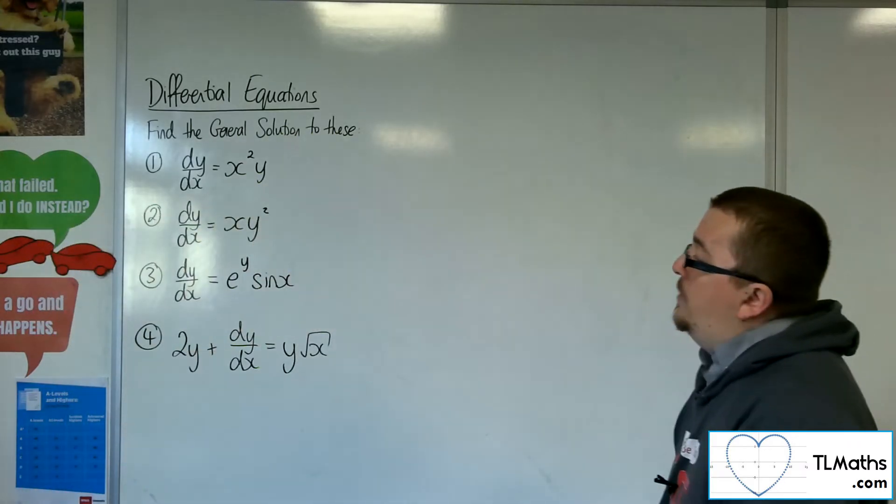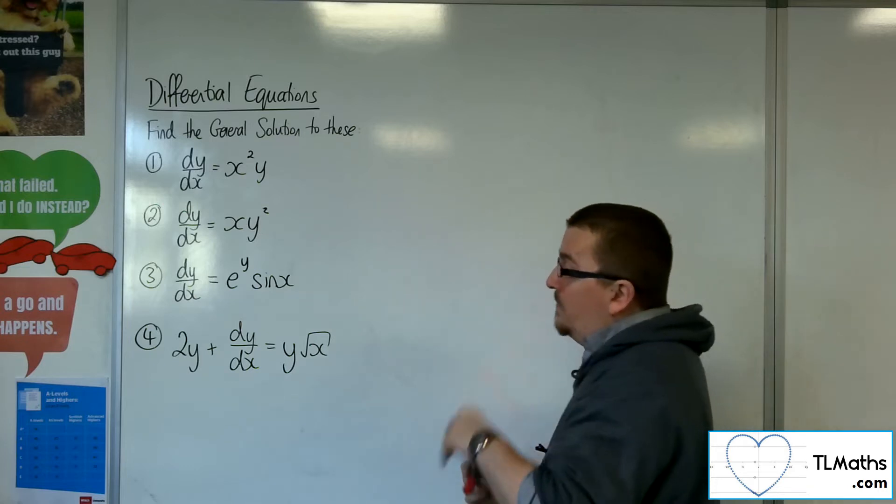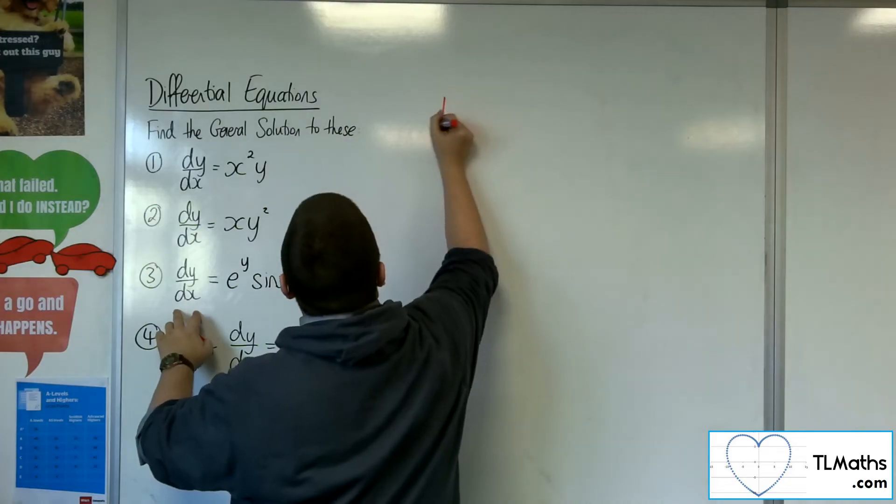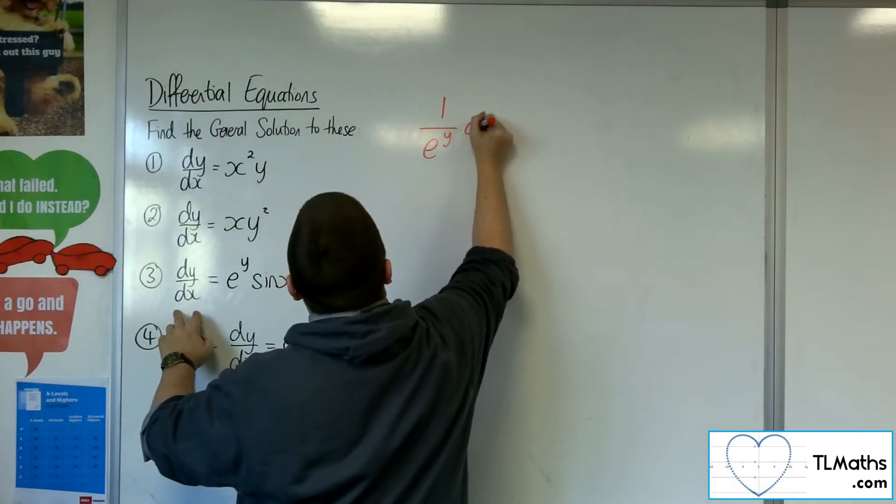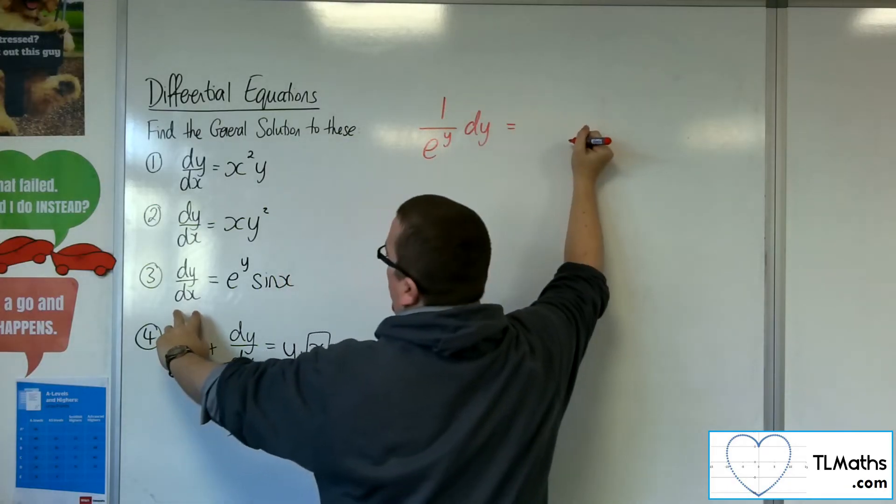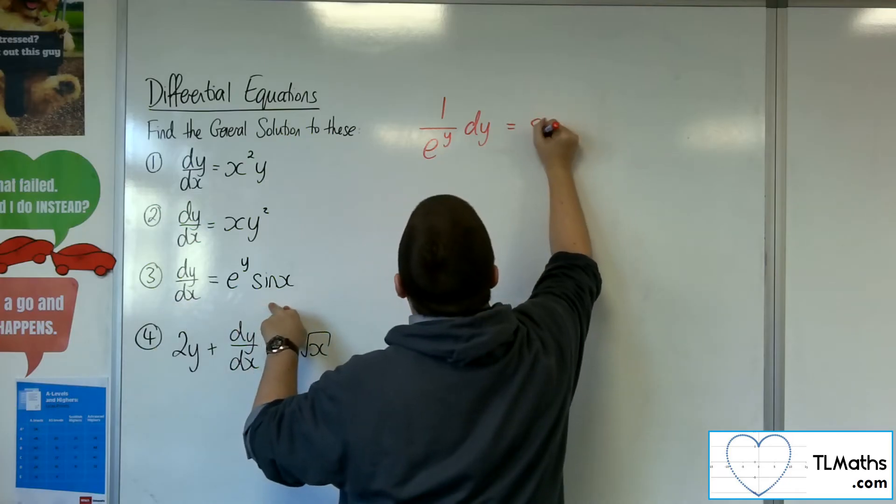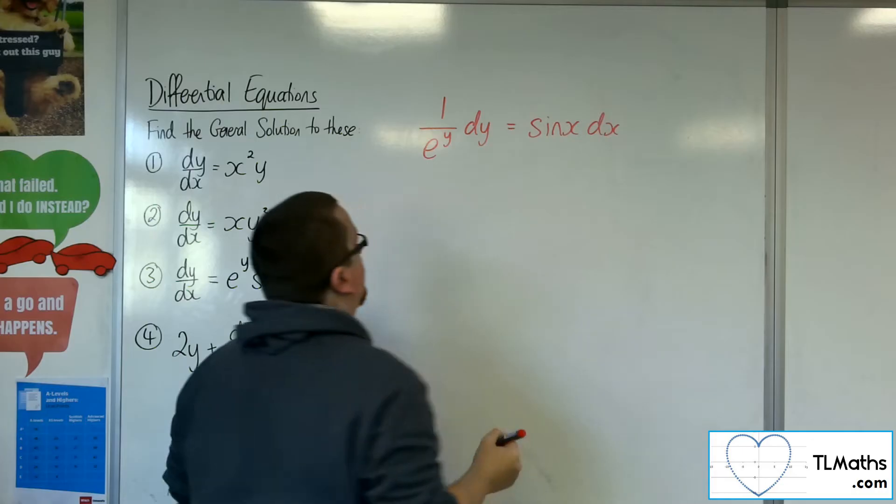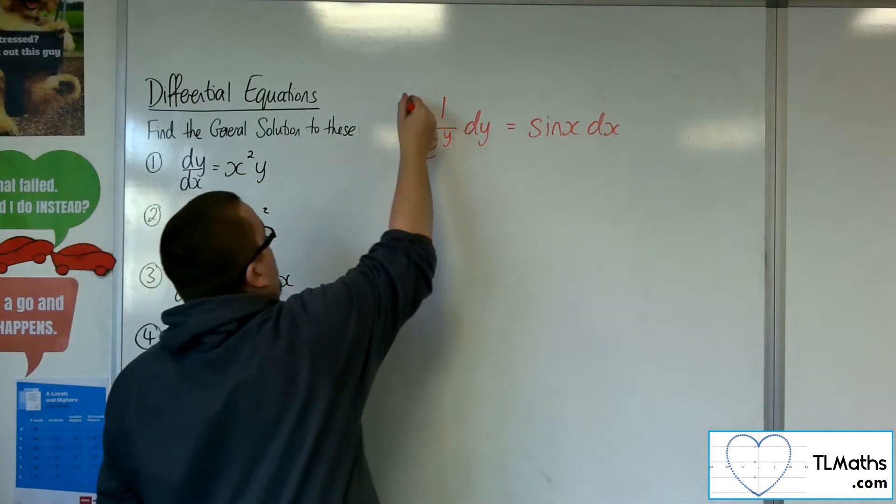So number 3, dy/dx equals e to the y sine x. So I could divide both sides by the e to the y, leave the dy where it is, multiply both sides by the dx, and then integrate both sides.